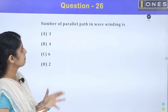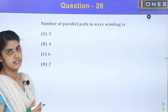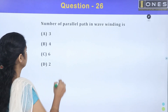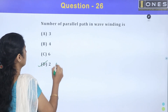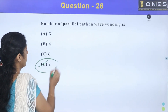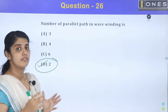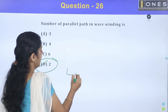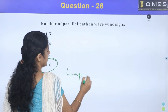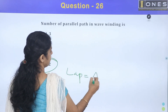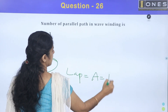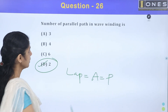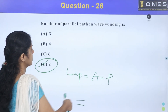Next question: number of parallel paths in wave winding. In wave winding, there are two parallel paths. In lap winding, the number of parallel paths is equal to the number of poles.